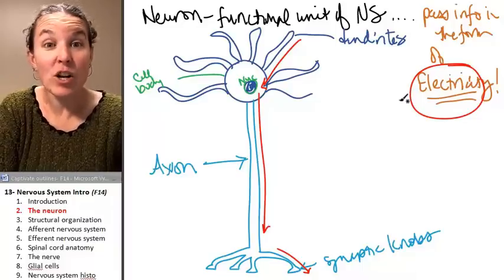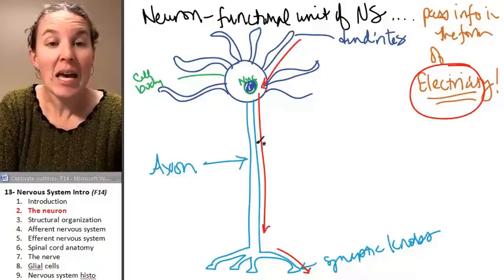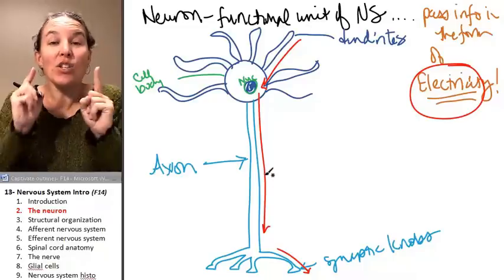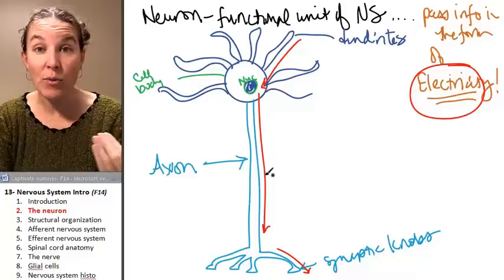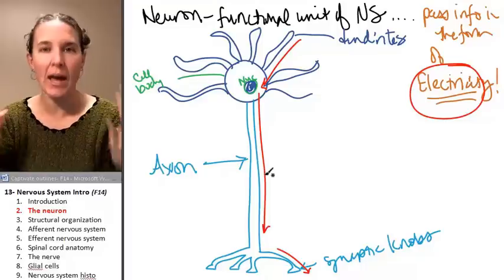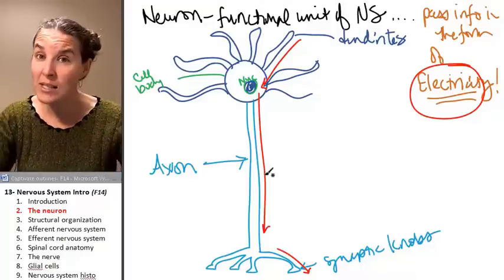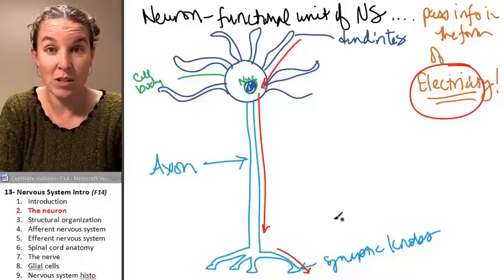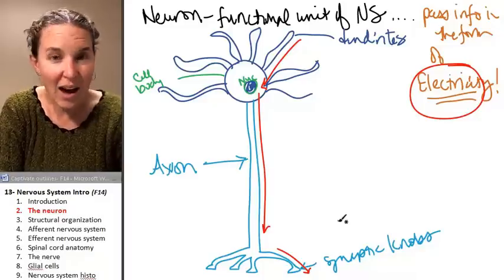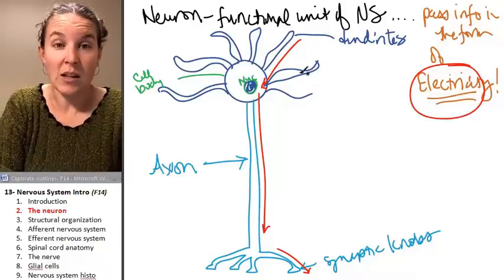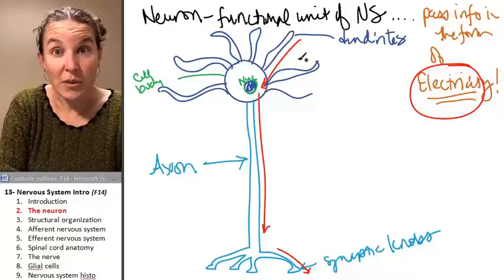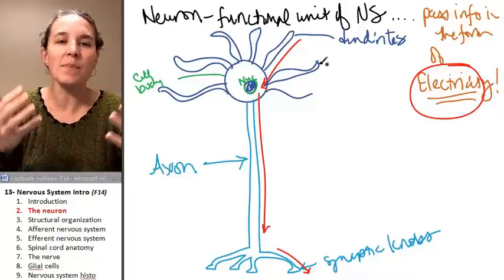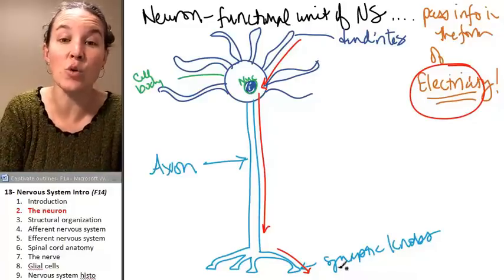dendrites deliver information toward the cell body. Axons deliver information away from the cell body. As soon as you accept that information can travel through this cell, the whole rest of the nervous system is going to be a lot easier because we're not going to go into the details of how that information is traveling. How does the cell do this? That's a topic for physiology. We're just going to accept that it happens. So, dendrites bring information into the cell body. That information passes through the axon toward the synaptic knobs.